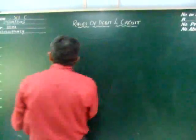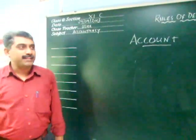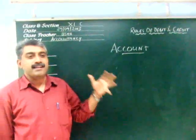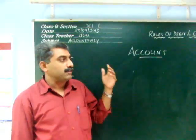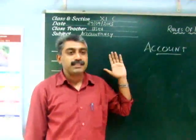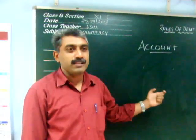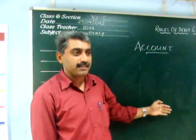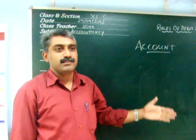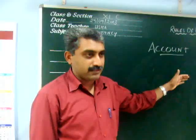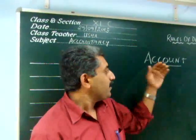Before going to the rules of debit and credit, I would like to tell you what is an account. An account is a place where you record similar types of transactions related to the same type of entity or same item. For example, a cash account means an account which includes cash items — all the transactions or aspects related with cash will be recorded in one place in chronological order.